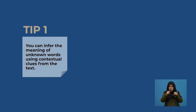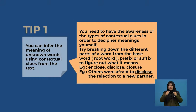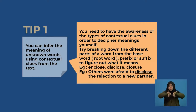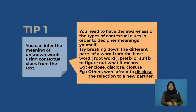Now let's go a bit into the details. Tip 1 tells us that you can infer the meaning of unknown words using contextual clues, pictures or diagrams from the text. This can be done by having awareness of the types of contextual clues in order to decipher meanings yourself. Try breaking down the different parts of a word — the base or root word, prefix or suffix — to figure out what it means. For example, words like enclose, disclose and closure.